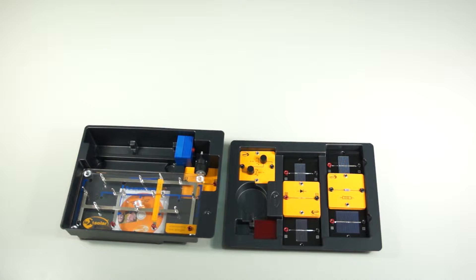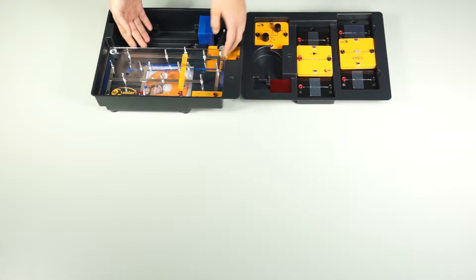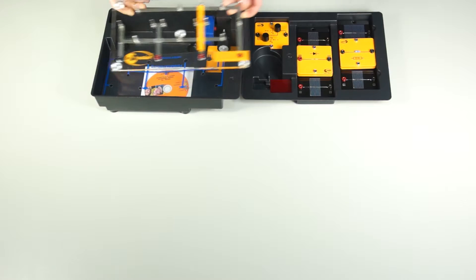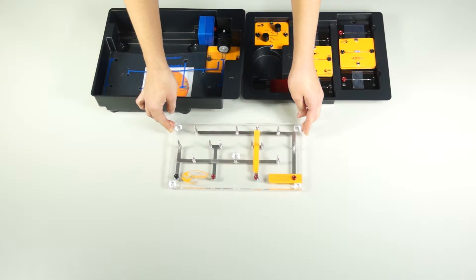We will now perform an experiment on a very practice-relevant topic about the shading of solar cells. To do this, we first need our base unit, which the individual modules can be plugged into and electrically connected.